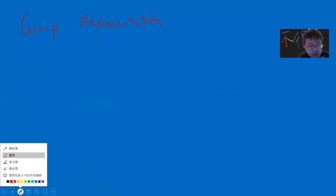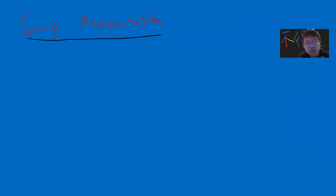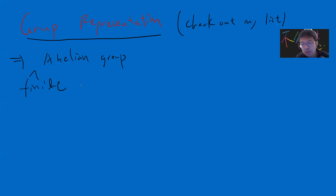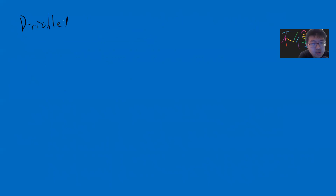I'll use black — it's more comfortable. For group representation, I'll assume you know enough; if not, check out my group representation playlist. In this context we only need the irreducible representations of finite abelian groups, which are one-dimensional. To prove Dirichlet's theorem we need to use the so-called Dirichlet character, so let me spend some time talking about the Dirichlet character.